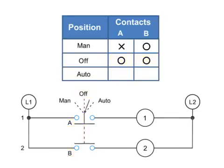With the selector switch set to AUTO, contact A is 0 or open, and B is X or closed.